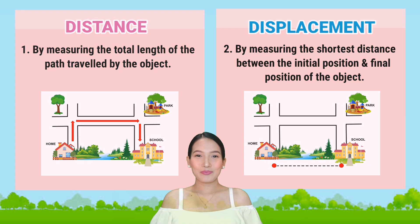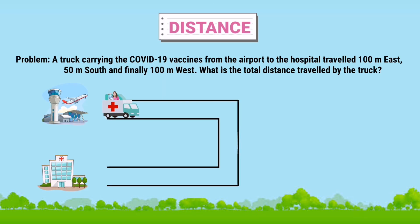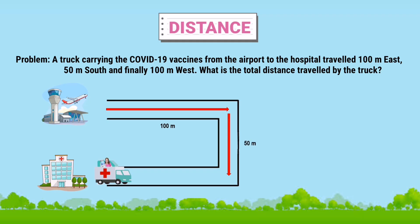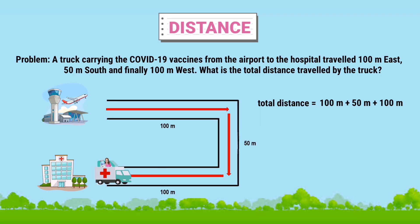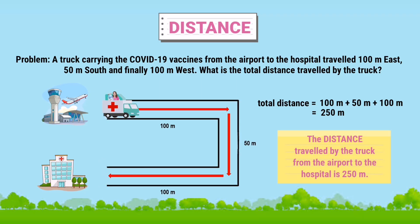Let's begin with distance. For example, a truck carrying the COVID-19 vaccines from the airport to the hospital traveled 100 meters to the east, then 50 meters to the south, and finally 100 meters to the west. What is the total distance traveled by the truck? In order to solve the total distance, you simply get the sum of all the lengths of path it traveled — 100 meters plus 50 meters plus 100 meters. The total distance traveled by the truck is 250 meters.